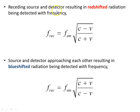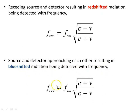In summary: for a receding source and detector, red-shifted radiation is detected with F received = F emitted times the square root of (C - V)/(C + V). For an approaching source and detector, blue-shifted radiation is detected with F received = F emitted times the square root of (C + V)/(C - V). Those are the two cases.